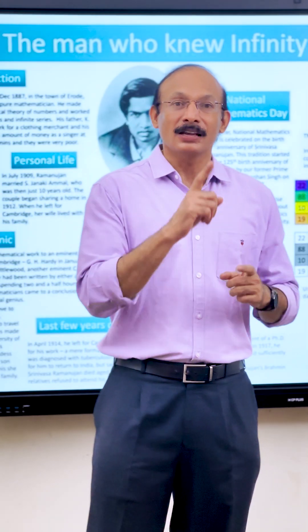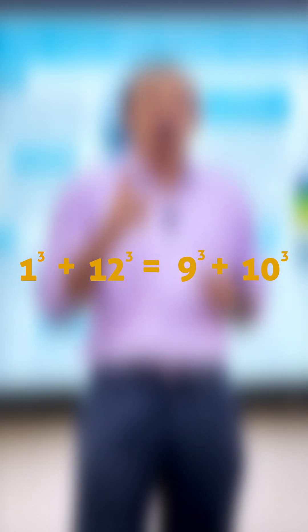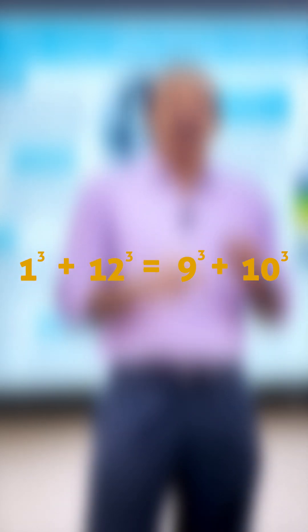1729 can be written as 1³ + 12³ and also as 9³ + 10³. Later, 1729 became known as Ramanujan's number.